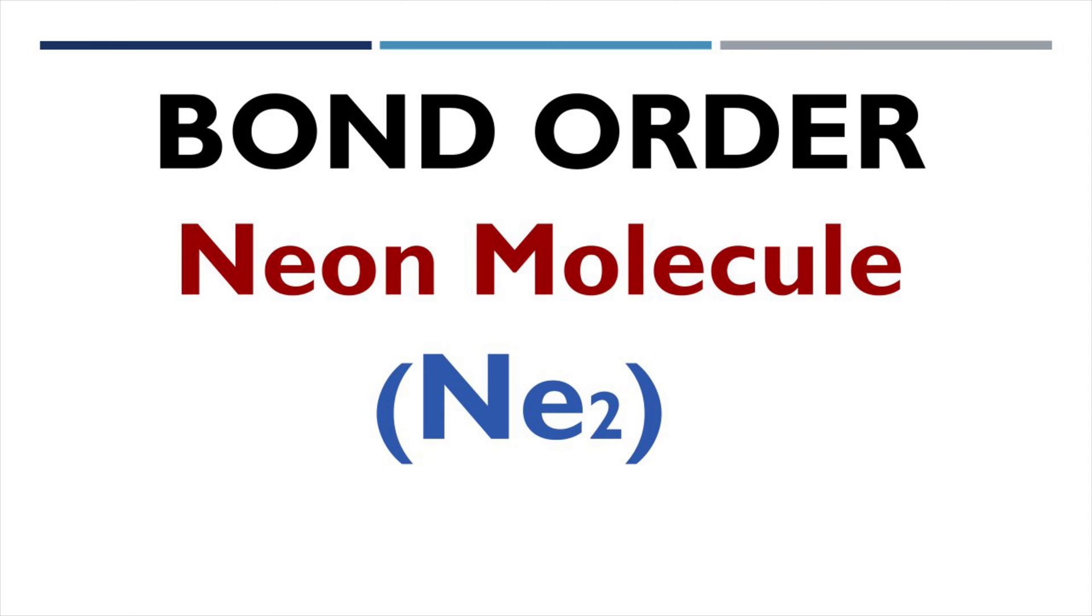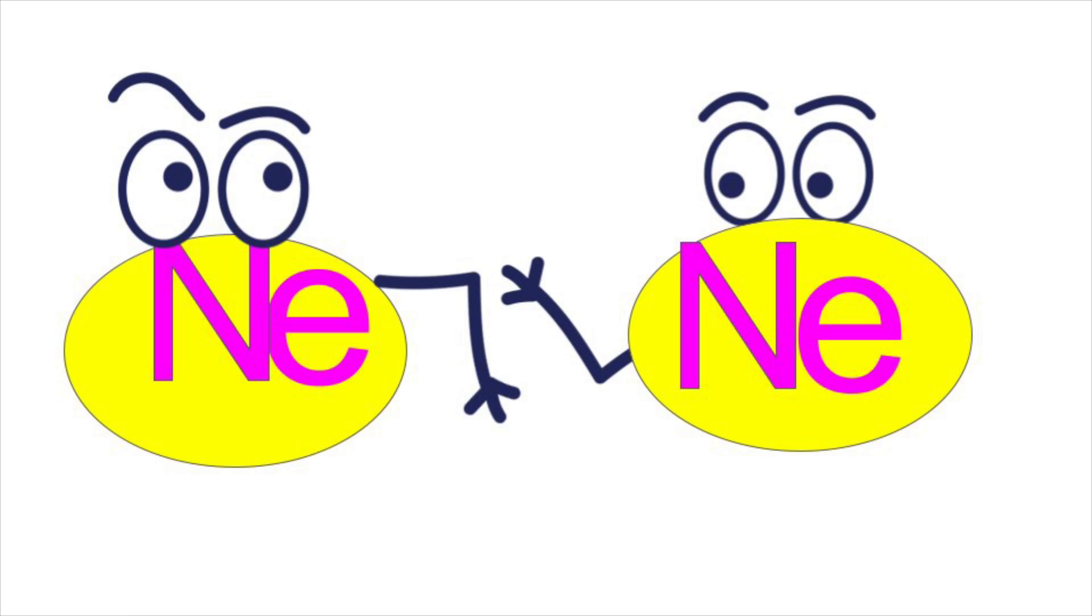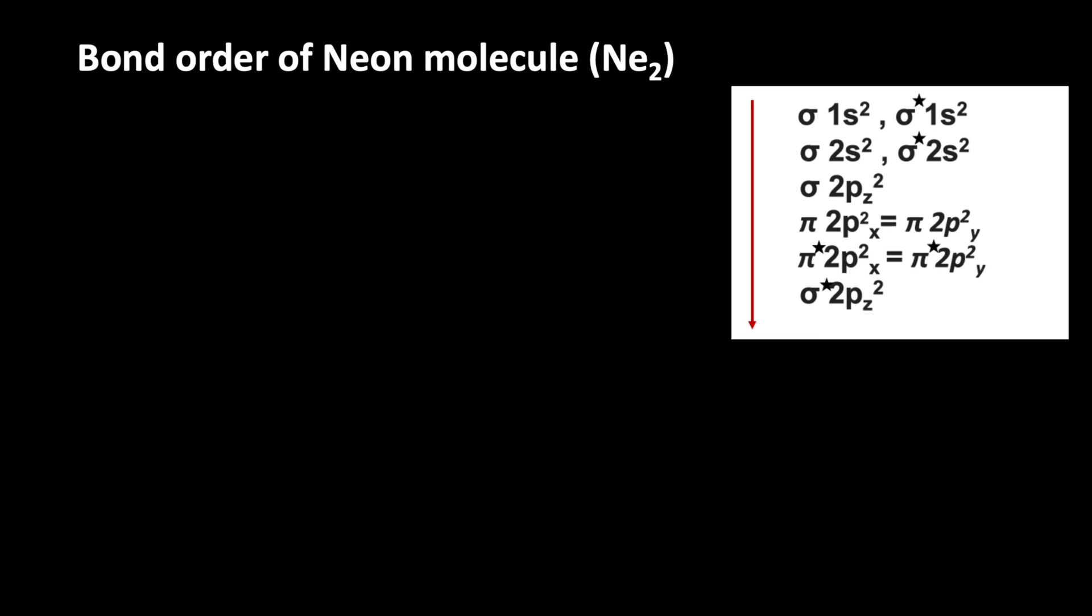Neon molecule is formed when two neon atoms are combined. Neon atomic number 10, from that we can write that the number of electrons present in neon molecule must be 20.